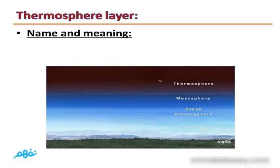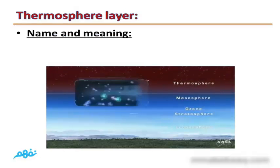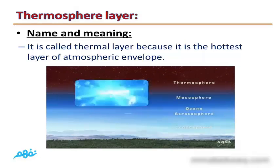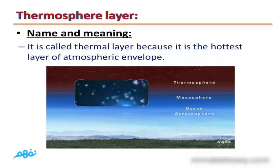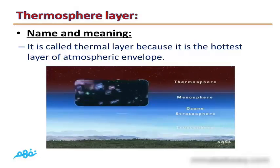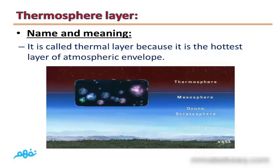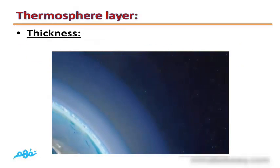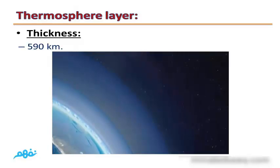The fourth layer is the Thermosphere. It is called by this name because it is the hottest layer of the atmospheric envelope. The thickness of the Thermosphere layer is 590 km.